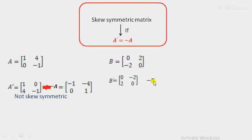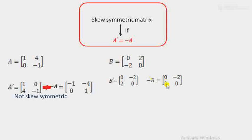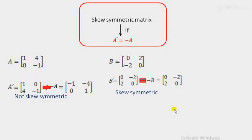Now find the value of minus B. Minus B means multiply B' by a negative sign throughout. So 0 remains 0, 2 becomes minus 2, minus 2 becomes plus 2, and 0 remains 0. Here B' and minus B are both equal. Therefore, it is a skew symmetric matrix.